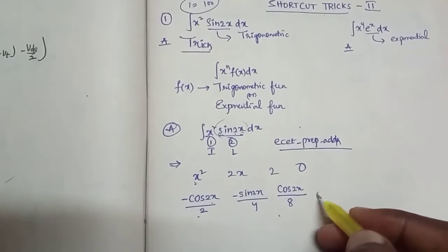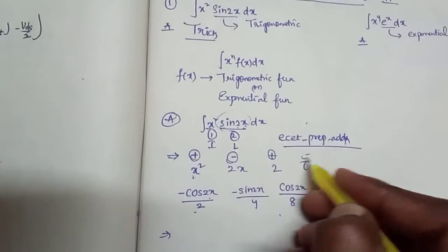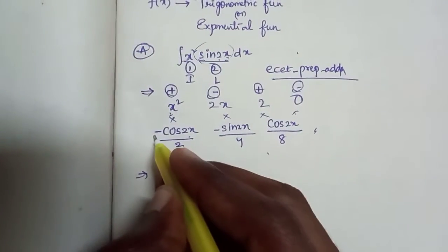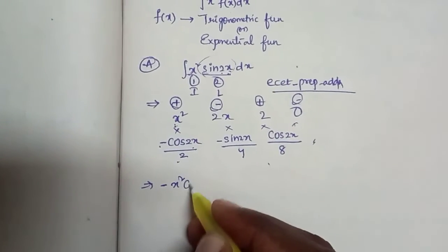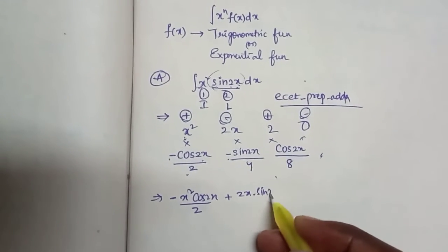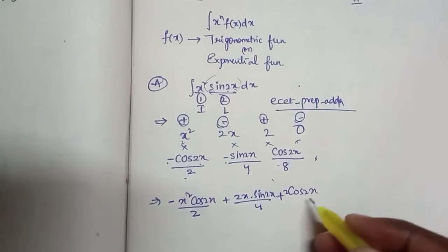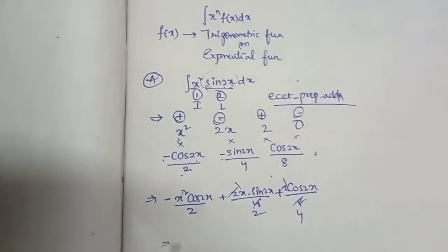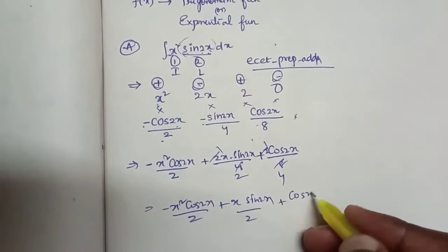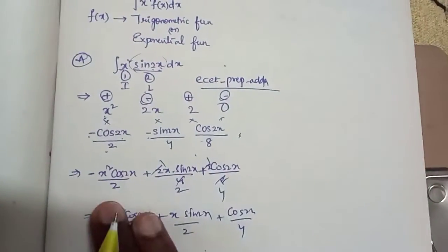Using the plus-minus alternating sign pattern in the tabular method, make the product. The final answer is: minus x² cos(2x)/2, plus 2x sin(2x)/4, plus 2 cos(2x)/8. Simplifying: the final answer is minus x² cos(2x)/2 plus x sin(2x)/2 plus cos(2x)/4. This simple process covers it.